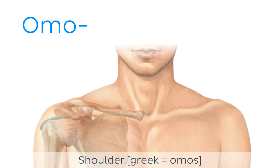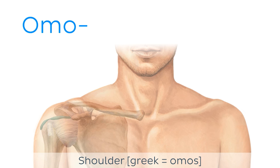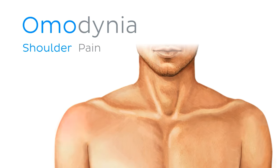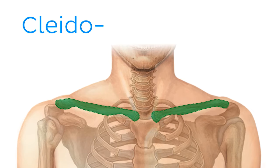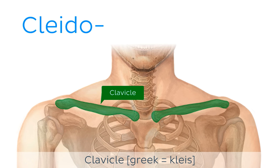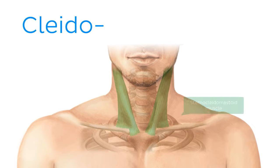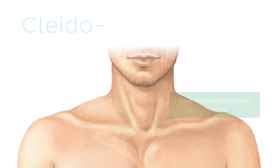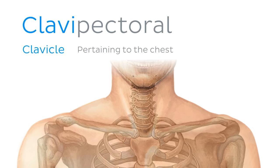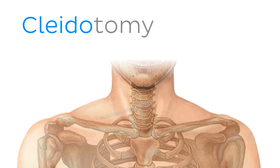How about homo, which refers to the shoulder, such as homodynia — pain of the shoulder. Another one is cleido, which refers to the clavicle or collarbone. You actually know this one already if you think about it: sternocleidomastoid — that muscle which reaches from the sternum and clavicle to the mastoid process. We also have the term clavi, as in clavipectoral. It's important to be aware of both forms. For example, we have a procedure known as cleidotomy, which involves a surgical division of the clavicle.